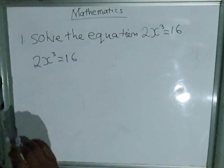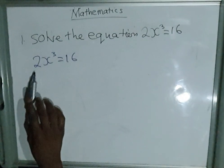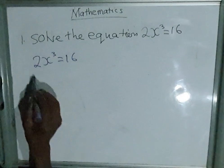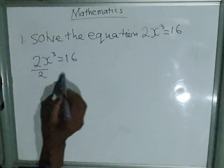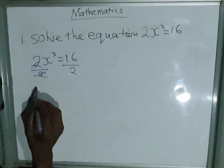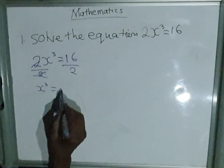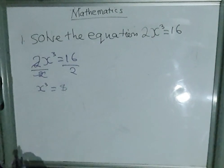For us to solve this equation with the unknown base, we have to get rid of the 2. We can do that by dividing both sides by 2. So, 2 and 2 go...